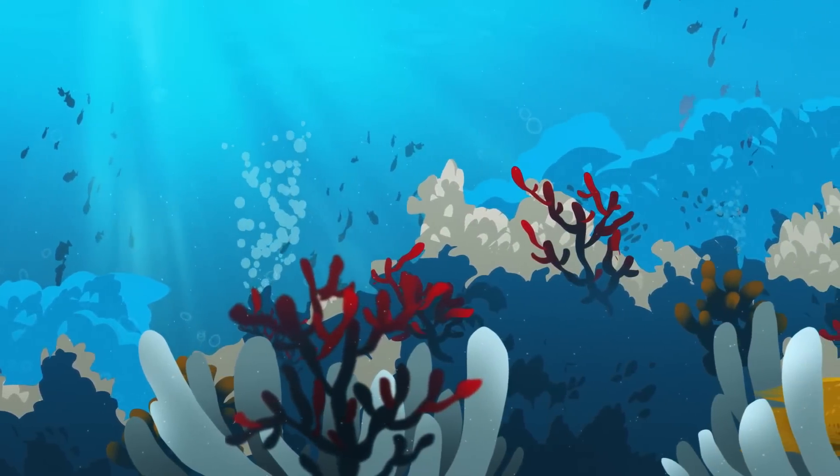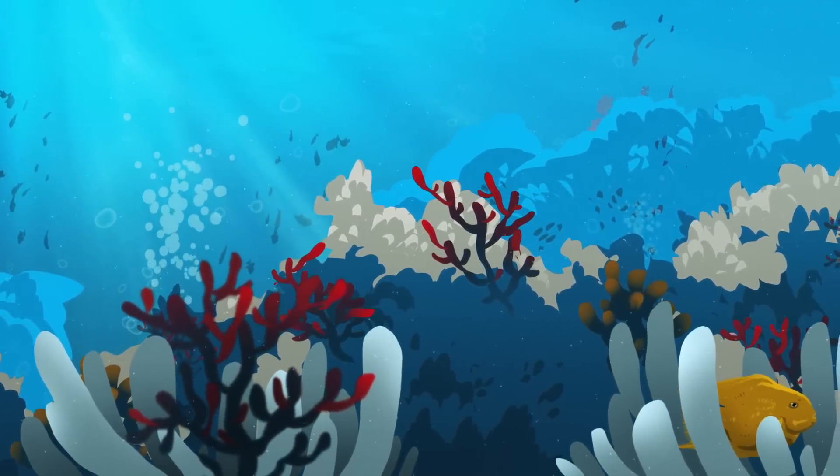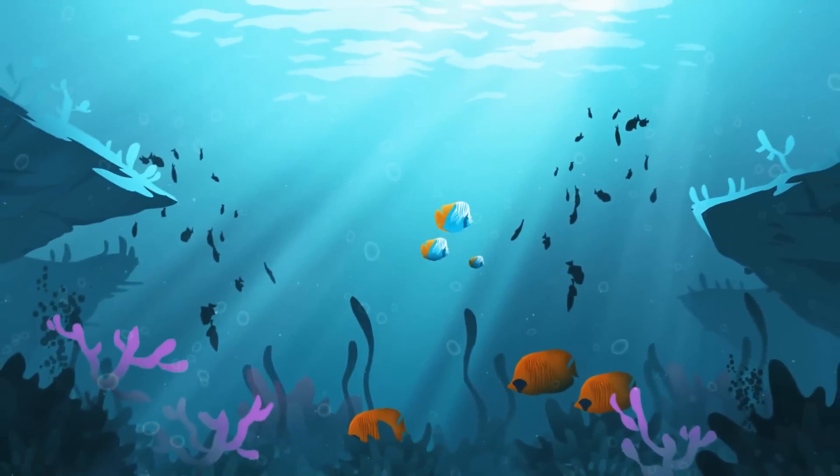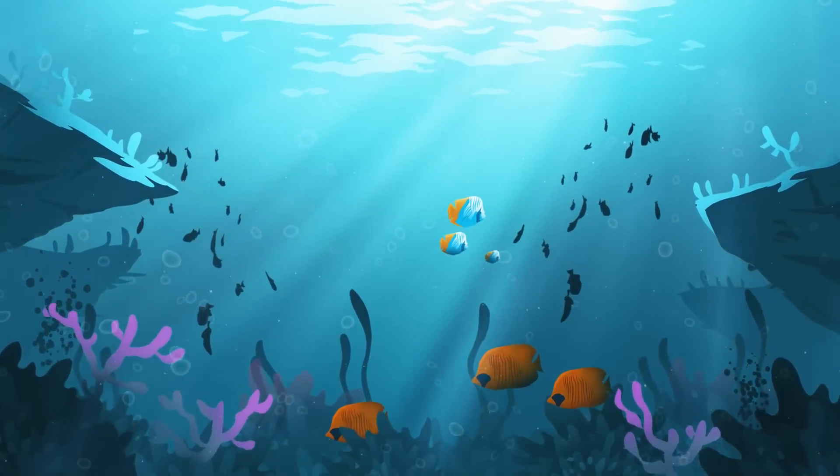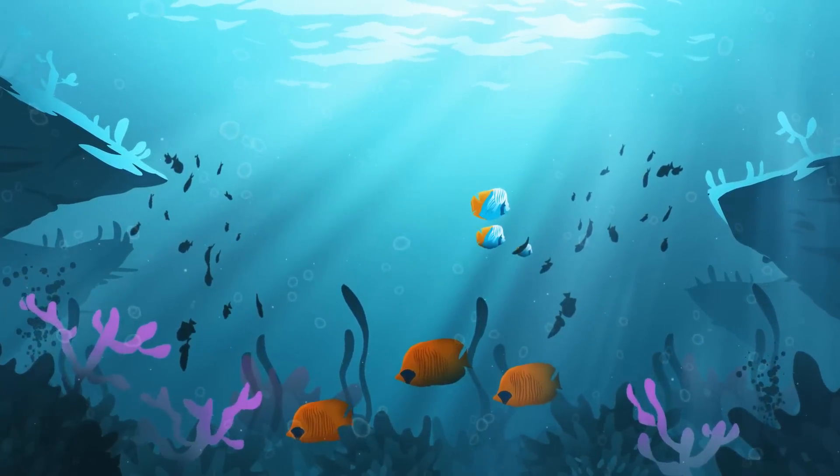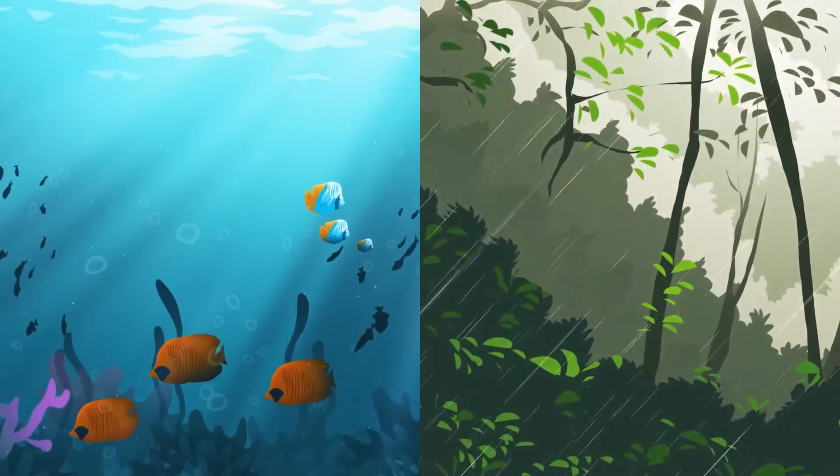Along coastlines, estuaries, and islands, marine plants and animals flourish in sunny, shallow waters. The bright sunlight nurtures many vibrant ecosystems, but none as biodiverse as tropical coral reefs, the rainforests of the sea.